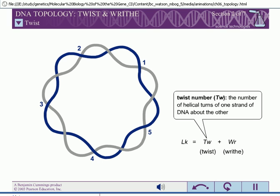Twist is simply the number of helical turns of one strand about the other. In other words, the twist number is equal to the number of times one strand crosses in front of the other strand. If CCC DNA is lying flat in a plane, the linking number is equal to the twisting number.